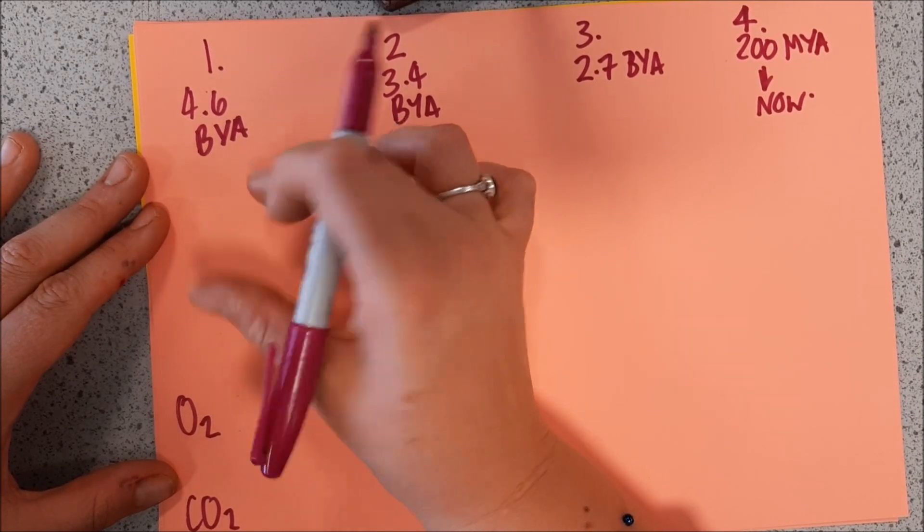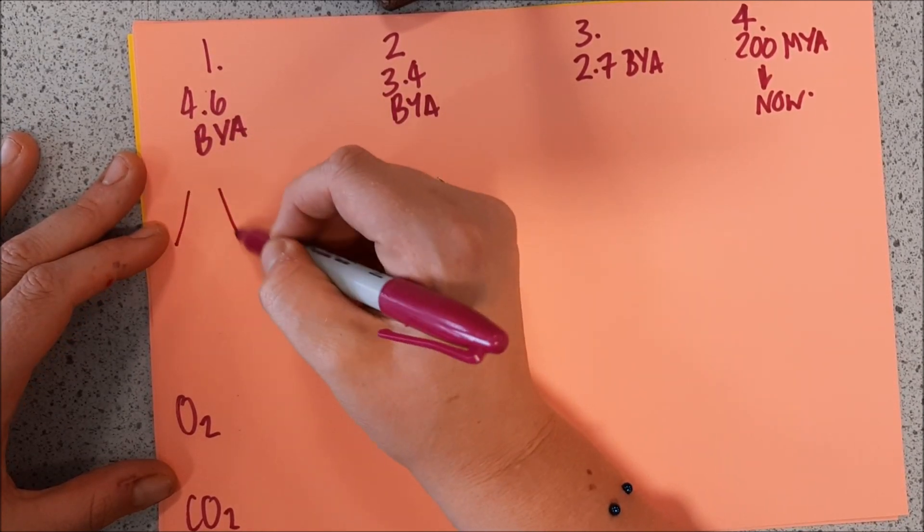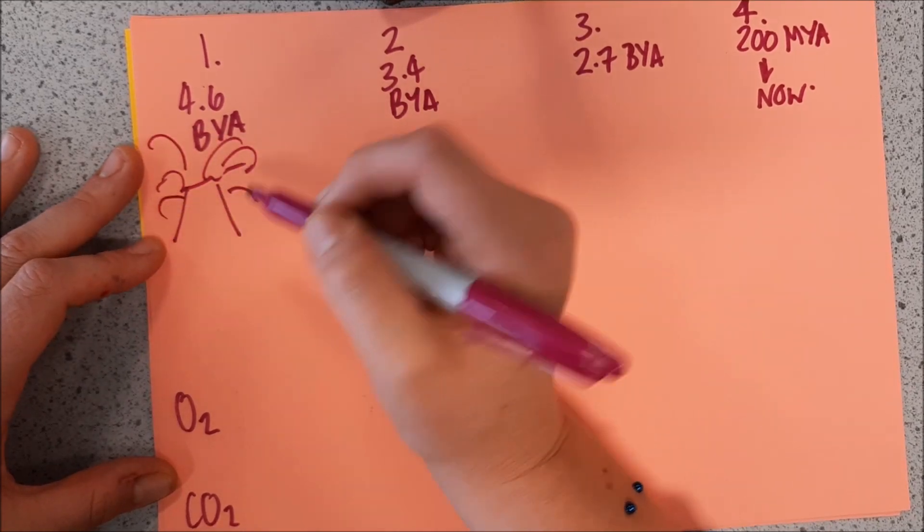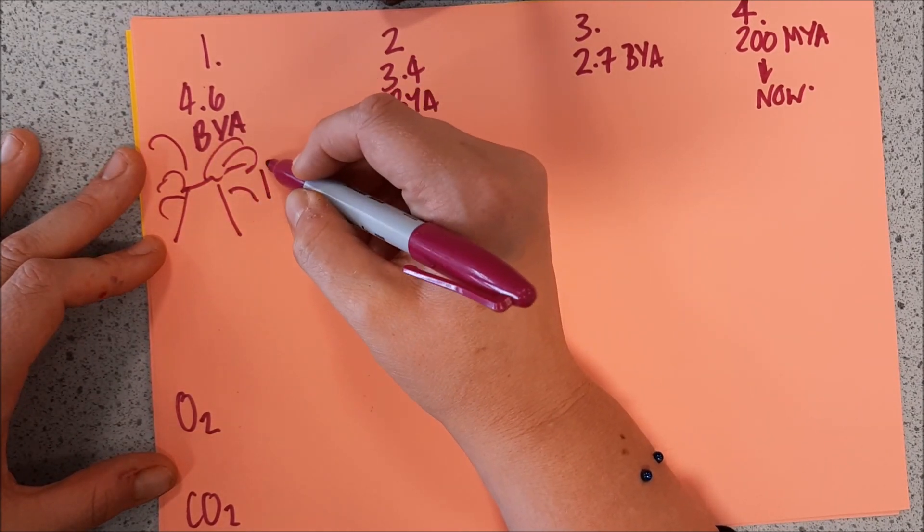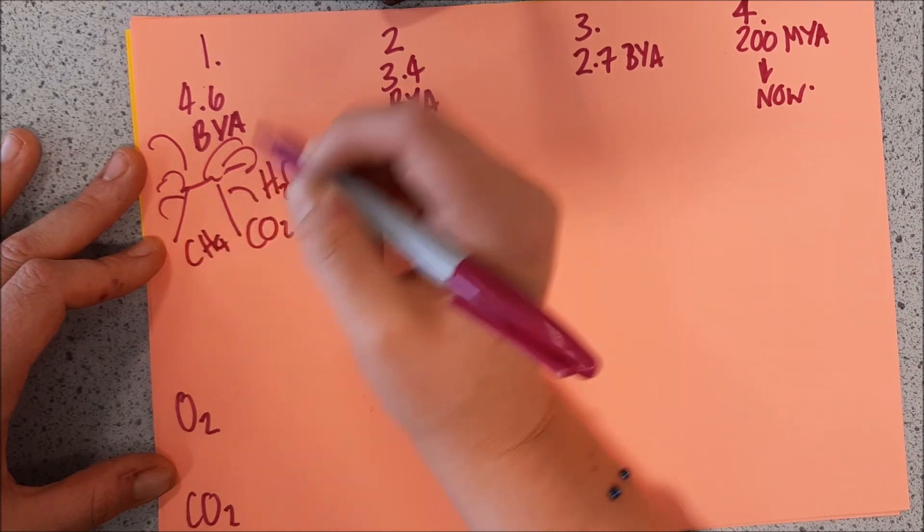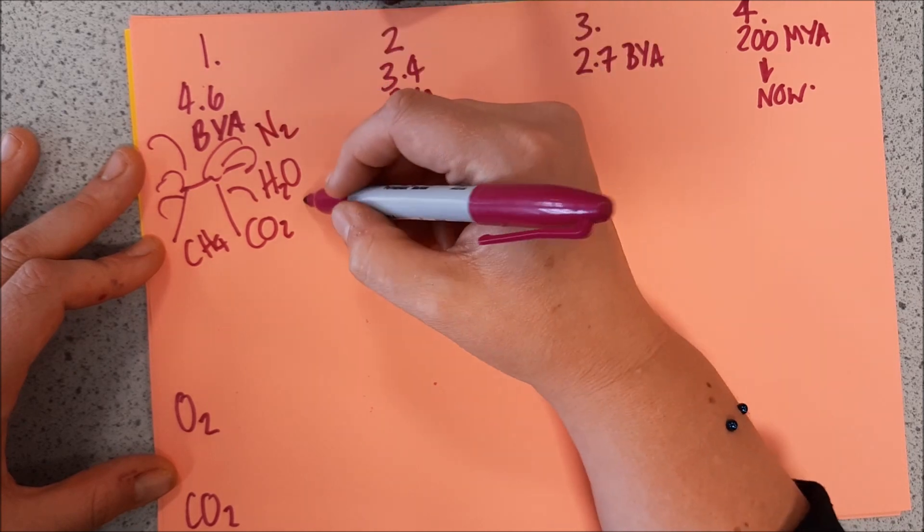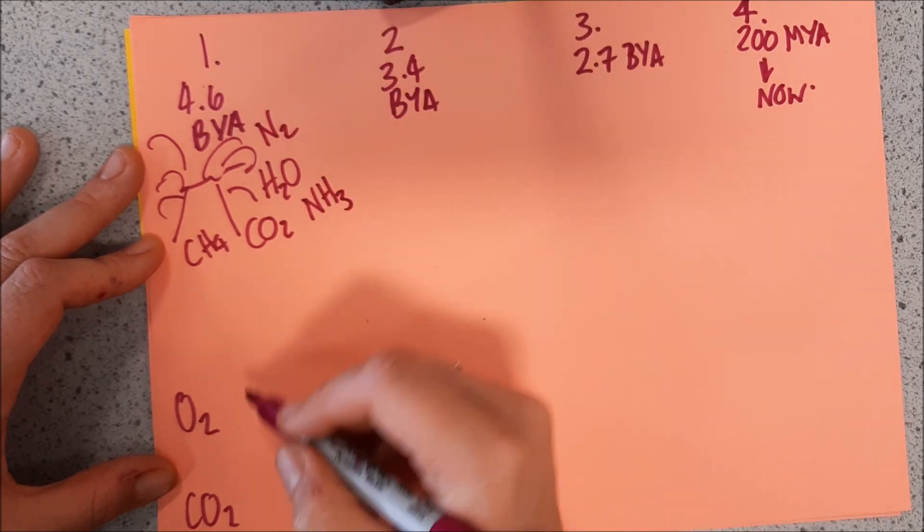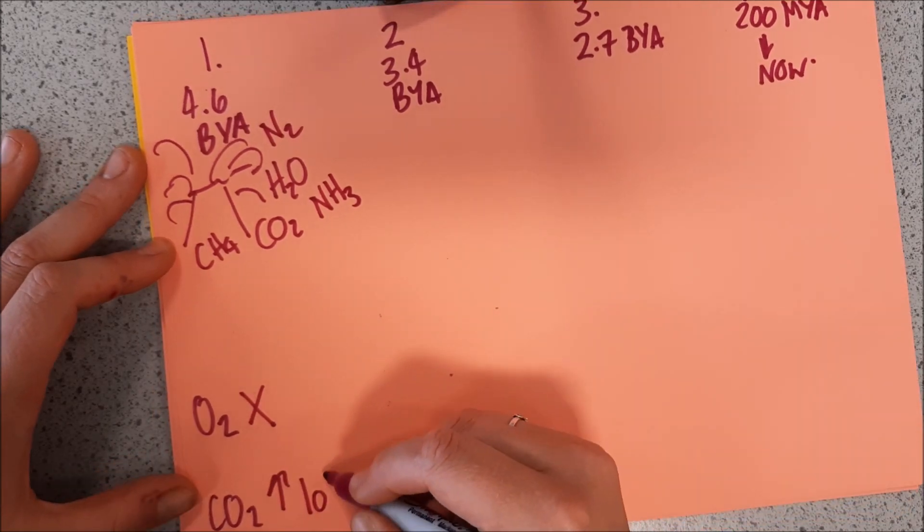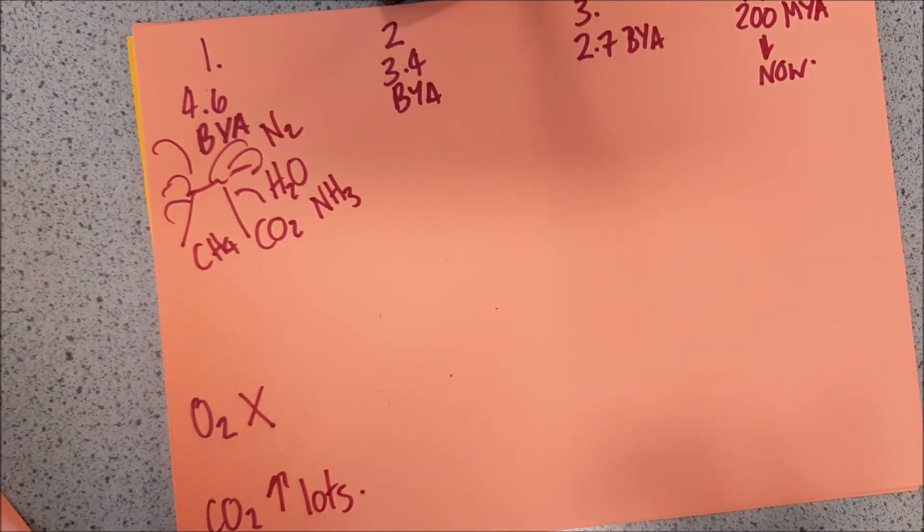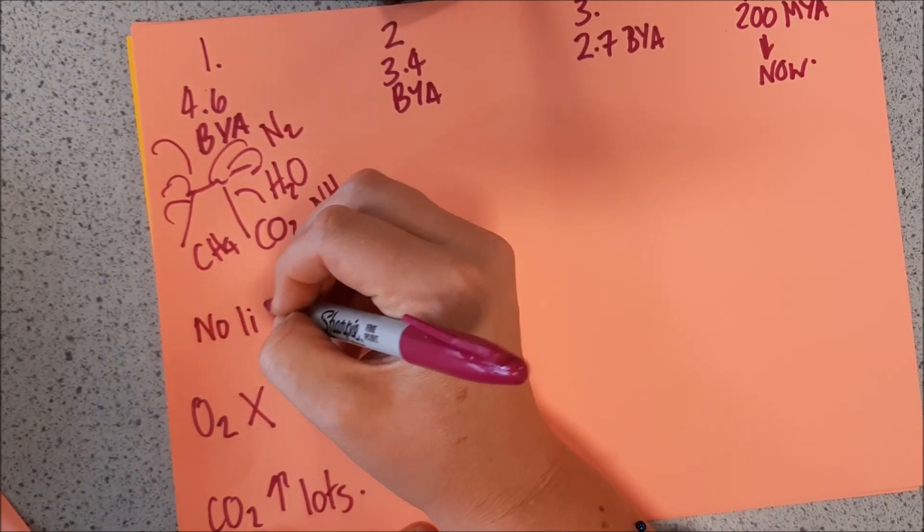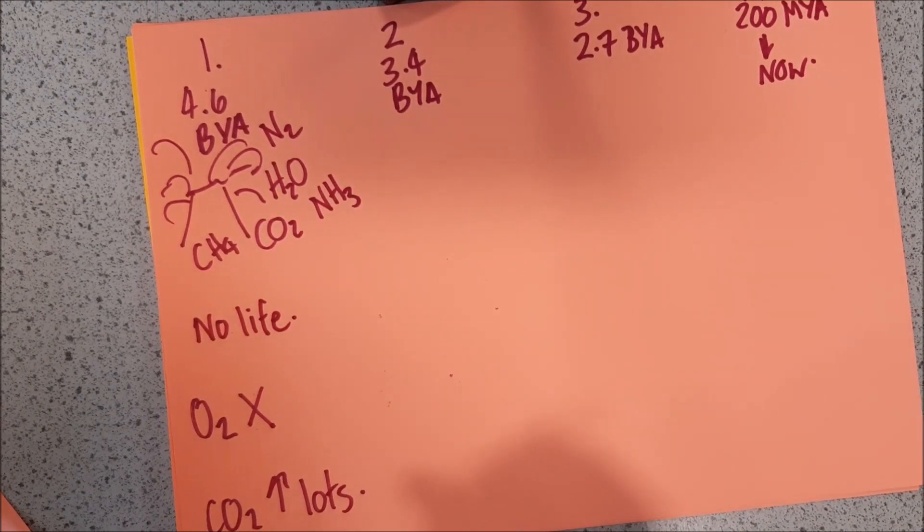So 4.6 billion years ago, that's about how old we think the Earth is. And the Earth initially was essentially a volcanic nightmare. So in the atmosphere here, we've got water, carbon dioxide, methane, nitrogen, ammonia, zero oxygen, high levels of CO2. I'm just going to write lots there. So that's sort of the overview of what's going on. There's no life. It's just this gaseous horrendousness.